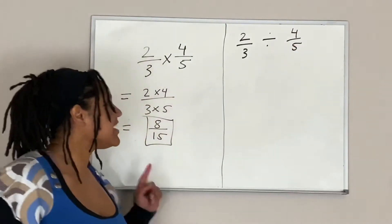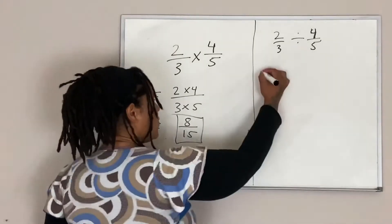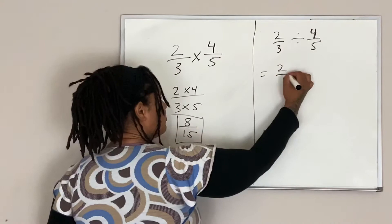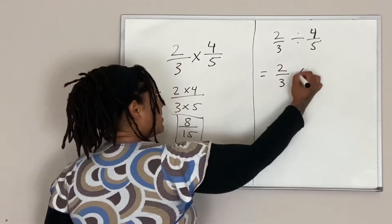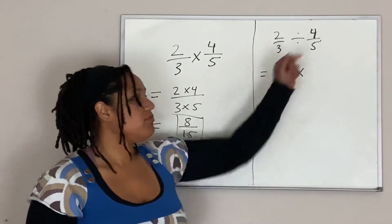Now the only thing that changes here is that we need to include one more step. So here I'm going to go ahead and rewrite 2 over 3, but this time we are going to multiply by the reciprocal of 4 over 5.